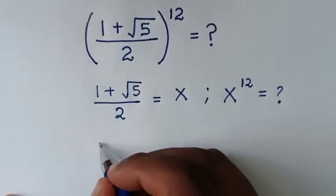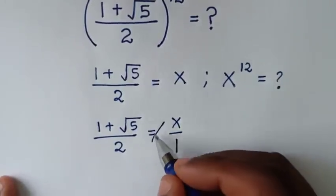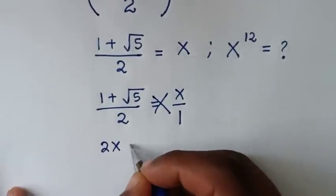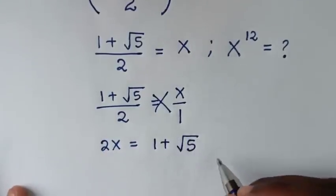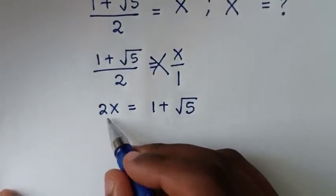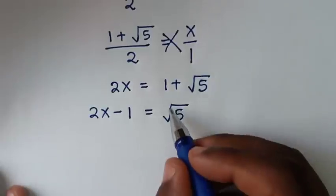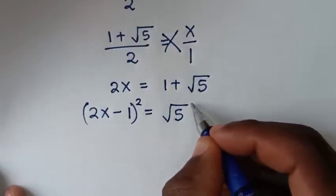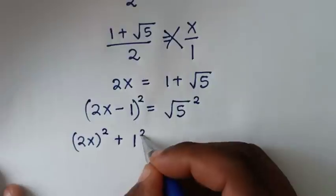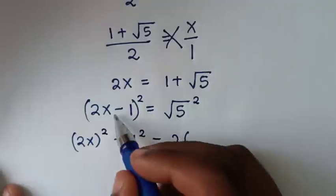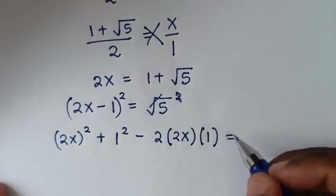In the next step, from (1 + √5)/2 = x, since x is the same as x/1, we can cross multiply. So 2 times x gives 2x, equal to 1 + √5. Then we take the 1 to the left side, so it will be 2x − 1 = √5.